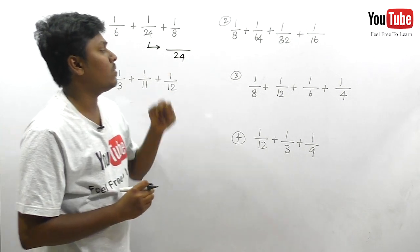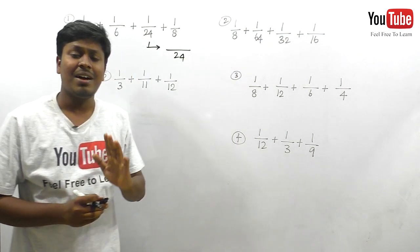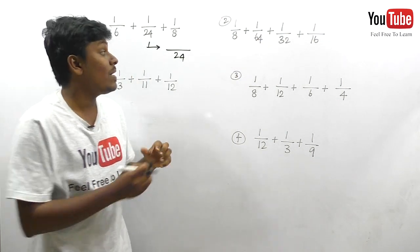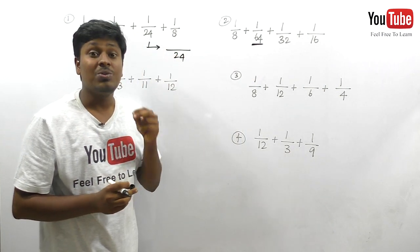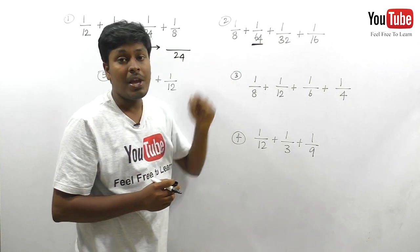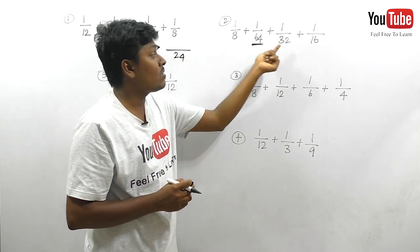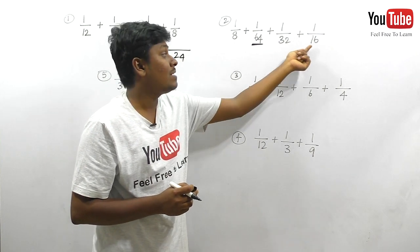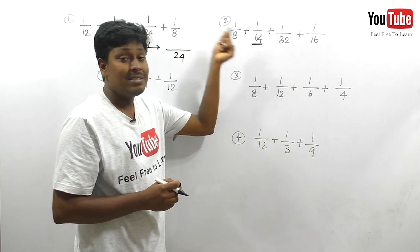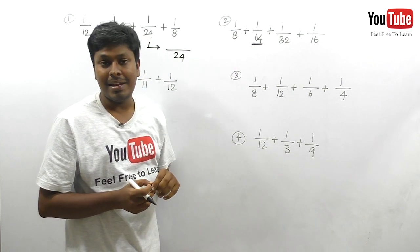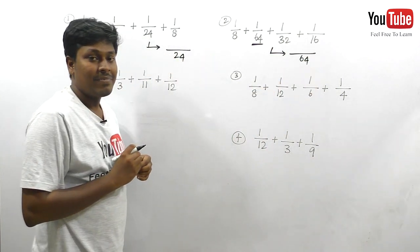Let me move on to the second question: 8, 64, 32, and 16. Our target is to see which number is larger. I can see 64 is the larger number. Now check whether 64 is divisible by all other remaining numbers: 8 × 8 = 64, 32 × 2 = 64, 16 × 4 = 64. So 64 is divisible by all other remaining numbers. Therefore, 64 will be your LCM.